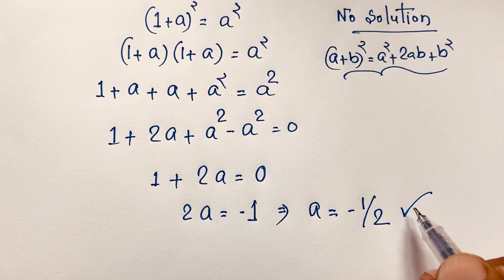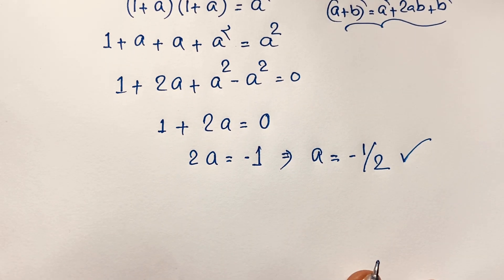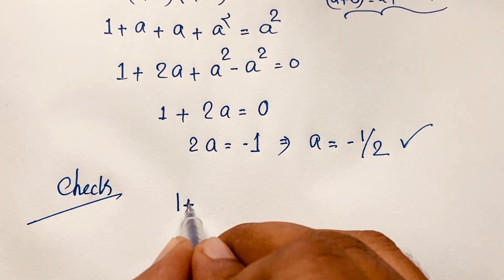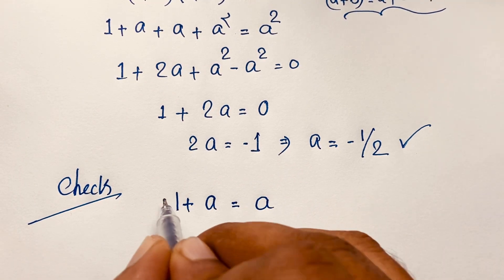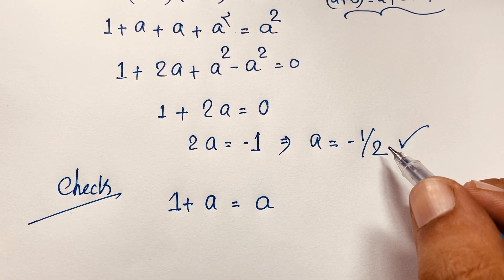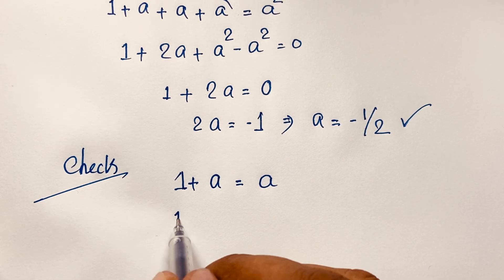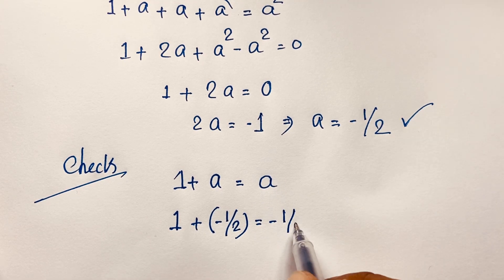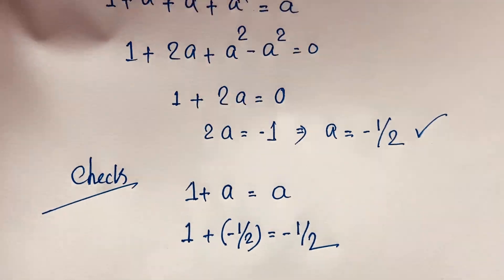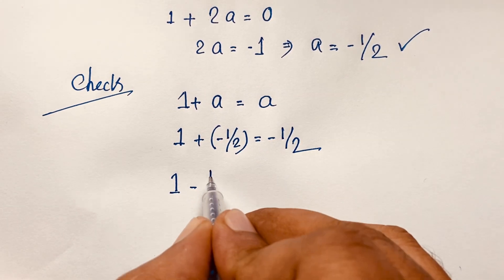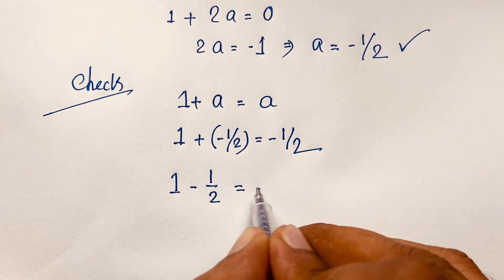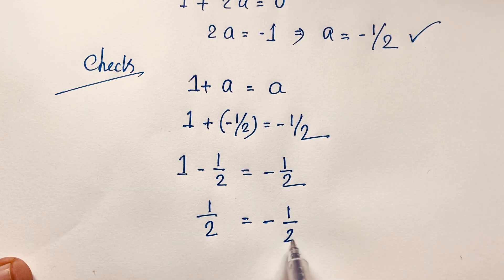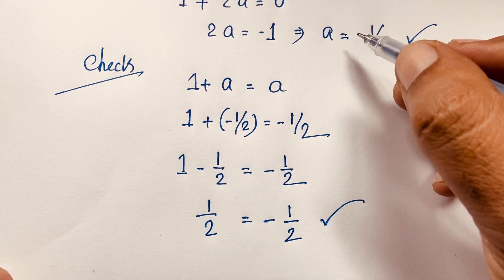Wow, we found a solution! Let's verify. Our question is 1 plus a equals a, and recall a equals negative one-half. Putting this value in: 1 plus negative one-half equals negative one-half. But 1 minus one-half is positive one-half, and the right side is negative one-half. Both sides are not equal, so it is not the right answer.